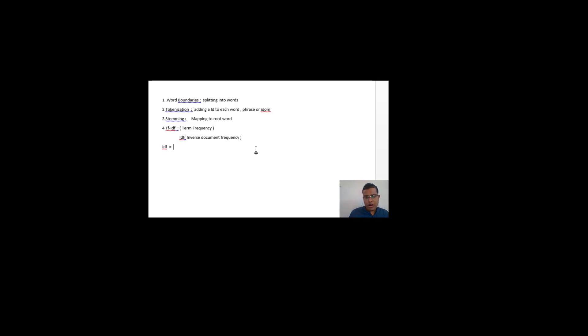To address that problem, we use IDF — inverse document frequency. The formula for IDF is: log of (total number of documents) divided by (number of documents in which that particular word occurs). Here, total number of documents means we are working with more than one document — a corpus.